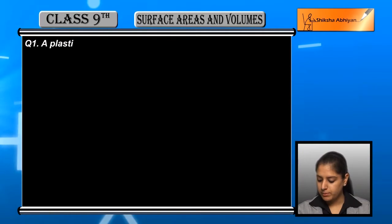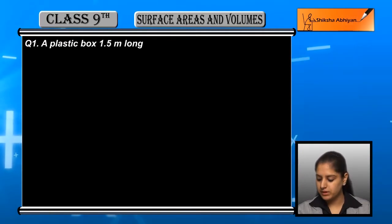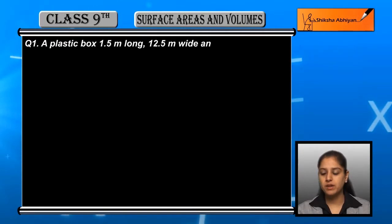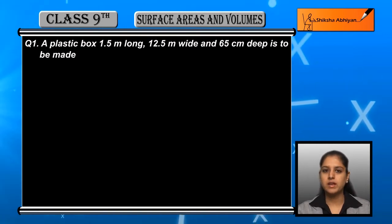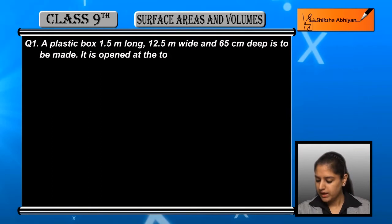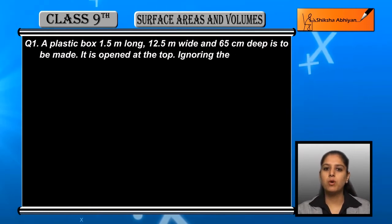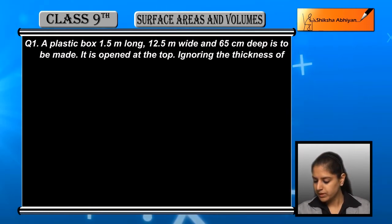Question number 1: A plastic box 1.5 meter long, 1.25 meter wide and 65 centimeter deep is to be made. It is opened at the top, ignoring the thickness of the plastic sheet.